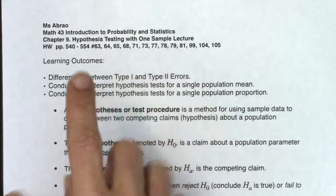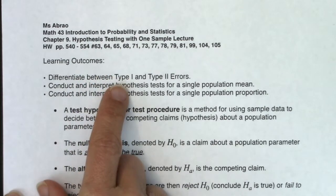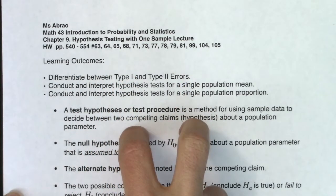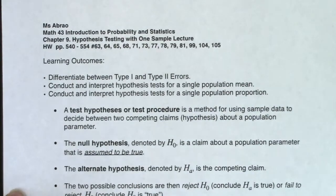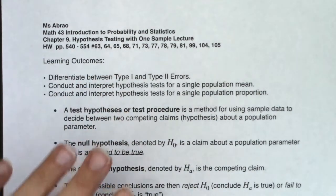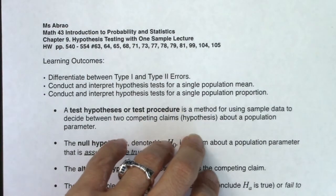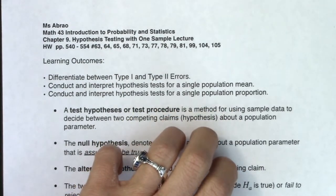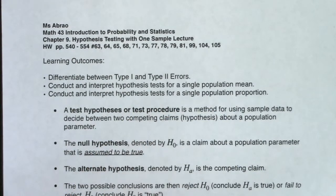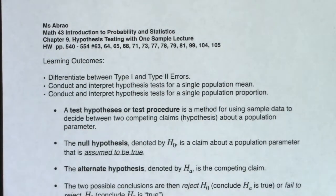So chapters 8 and 9 are one sample. Chapter 8 was one sample confidence intervals. Chapter 9 is one sample hypothesis testing. In chapter 10, we're going to do two sample hypothesis testing. And then in 11 and 13, three or more — different methods depending on if we have a categorical variable or a numerical variable, or whether we're in proportion land or mean land.